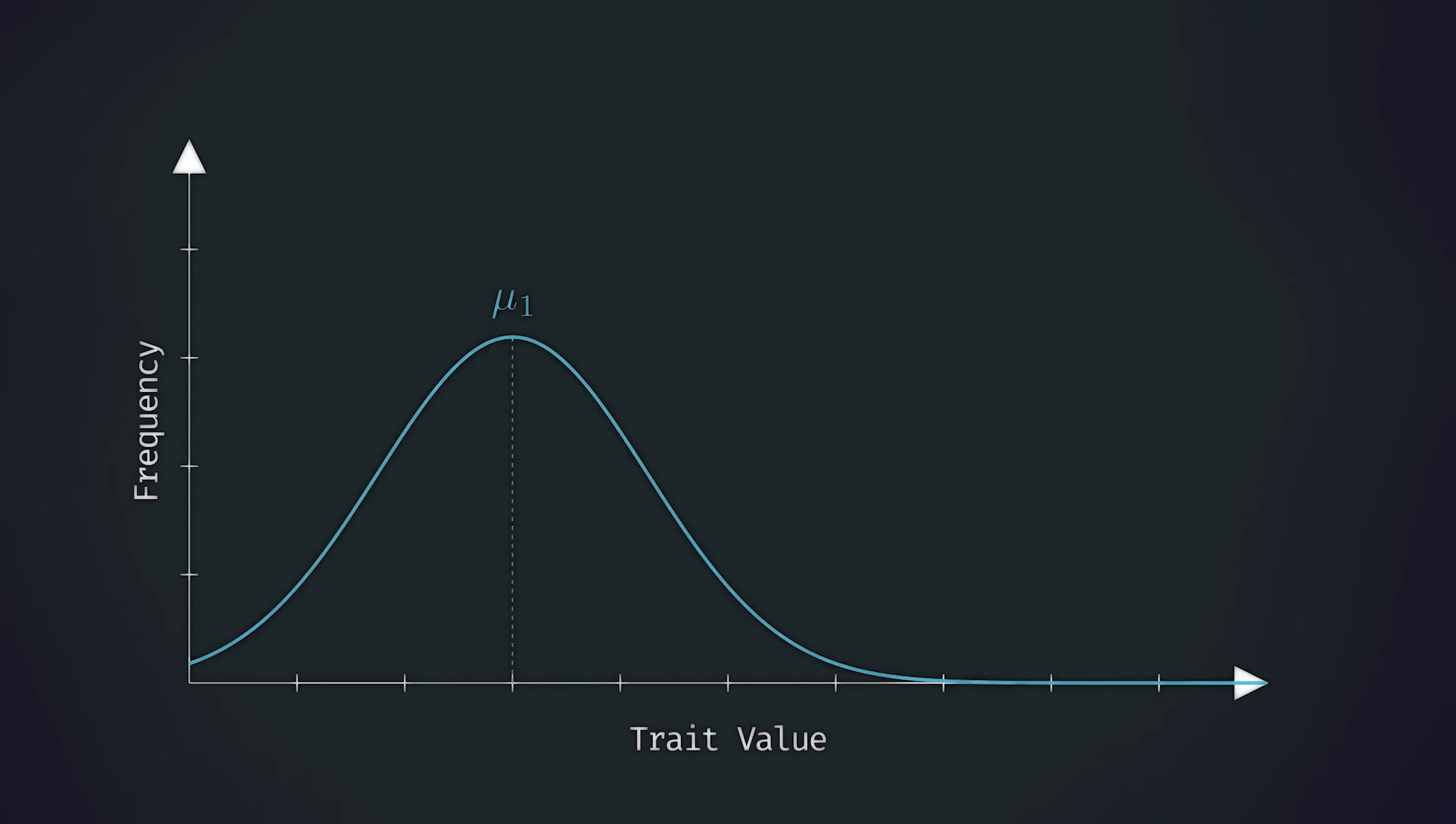The curve that we're looking at is a Gaussian distribution centered around the mean denoted with mu sub 1, where the subscript 1 is telling us that we're looking at the first generation. Suppose that most of the individuals in the population die and fail to reproduce, but those in this green region of the graph, i.e. those with a sufficiently high value for the trait, are able to survive and pass on their genes.